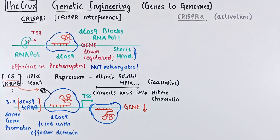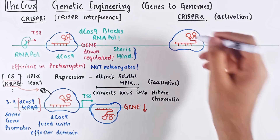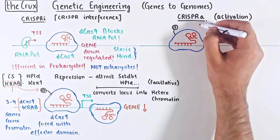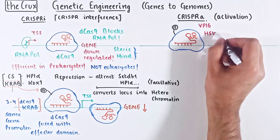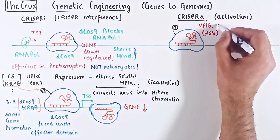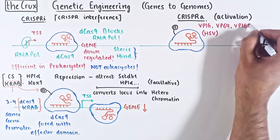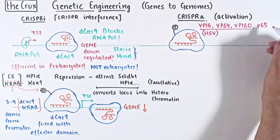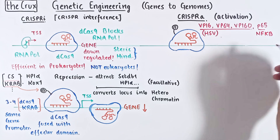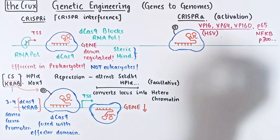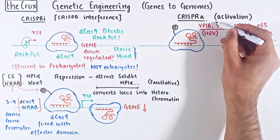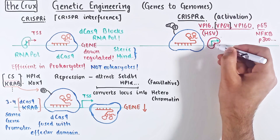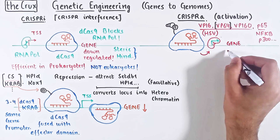In contrast, you can envision the opposite scenario. Instead of using KRAB, you use a different effector domain like VP16, which comes from herpes simplex virus. You can also add 4 copies of VP16 — that's called VP64 — or 10 copies, which is VP160. Or you can add a P65 domain from NF-kappa B factor, or P300, or anything similar. If the guide RNA guides this dCas9 close to a gene promoter, VP64 or other effectors can attract transcription factors and up-regulate the gene expression.